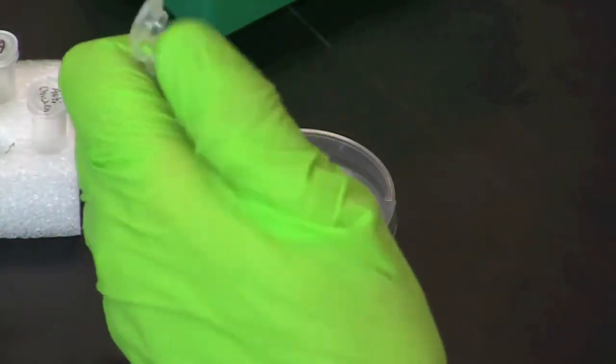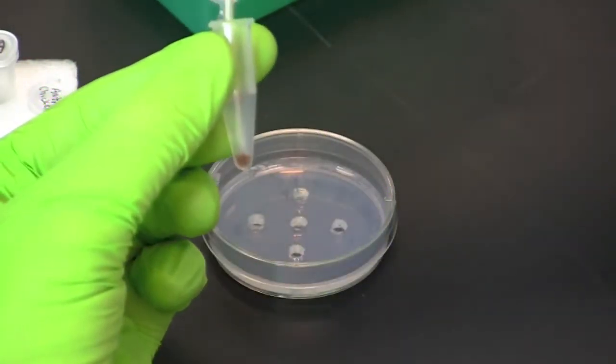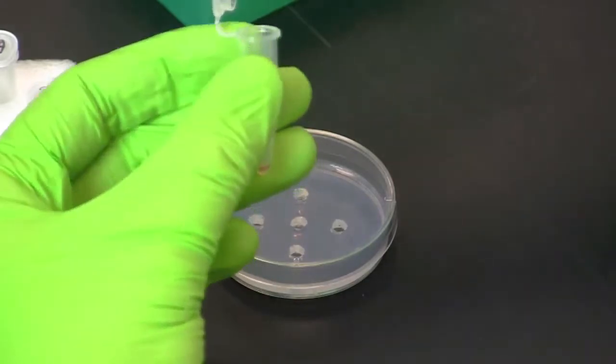Using a clean pipette tip, pipette 15 microliters of positive control into the hole labeled plus.